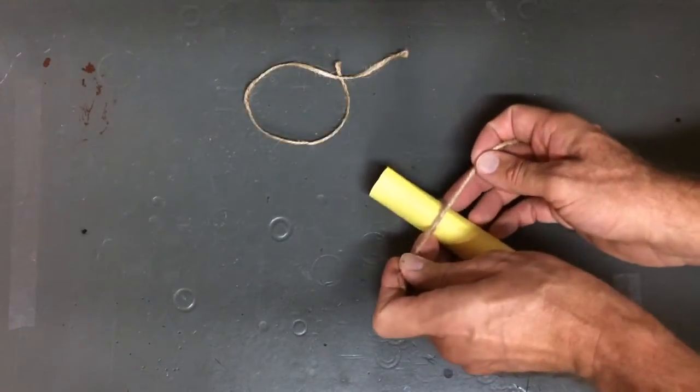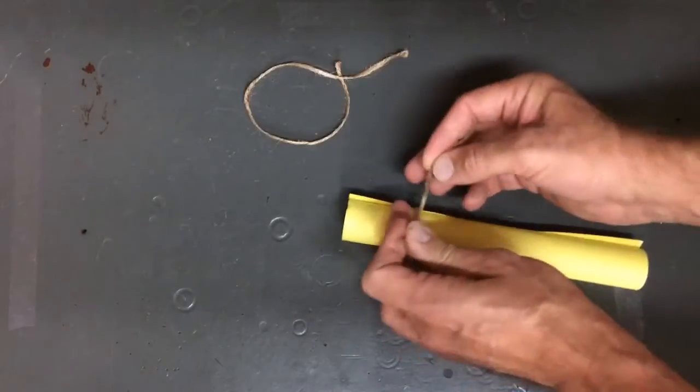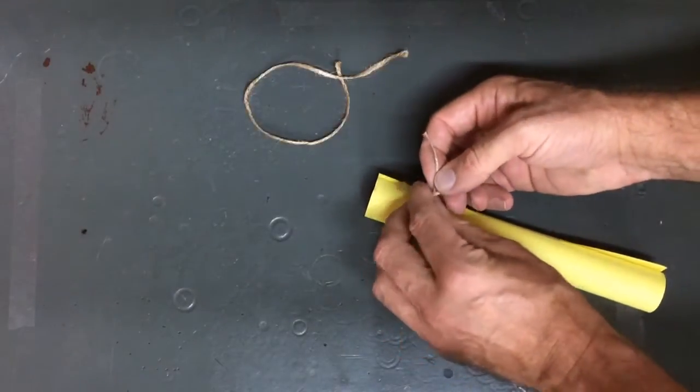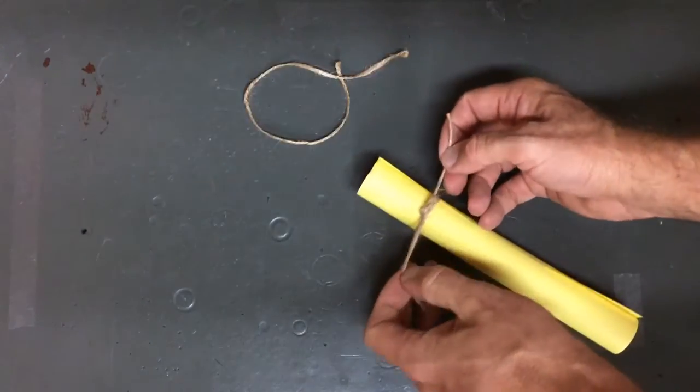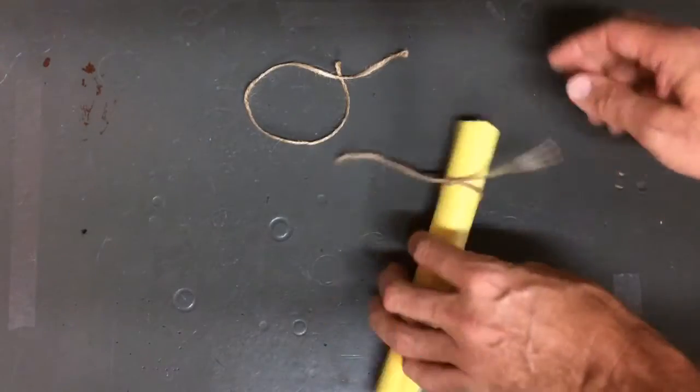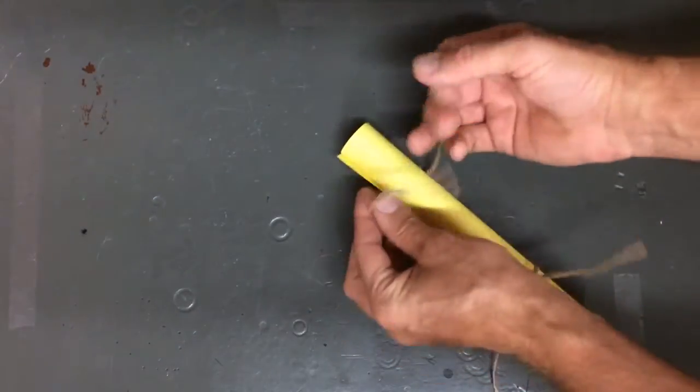So I'm going to make a knot, and not too tight. You don't want to crease the paper, but you also don't want it to slide. Do the same thing to the other end.